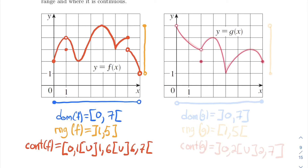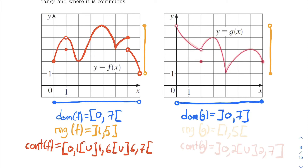Now let's do the same thing for the second graph. Let's find the domain first. It starts at 0 but with a hollow dot, and then we have outputs everywhere all the way up to 7. So the domain is from 0 excluded to 7 included. What about the range? The smallest possible value is at 1, and it goes all the way up to 5, but at 5 we have a hollow dot. So the range is from 1 included to 5 excluded.